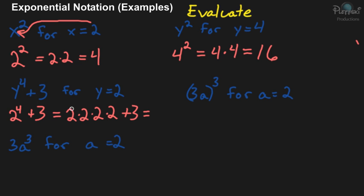Okay, so then you have 2 times 2, which is 4. And then 4 times 2, times 2, which is 8. And then 8 times 2, which is going to be 16. And then you're adding the 3 to the 16 to get 19.